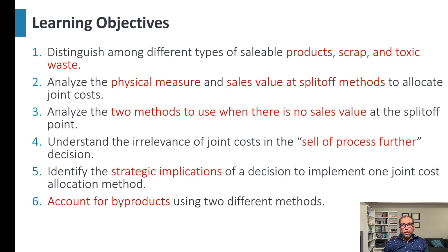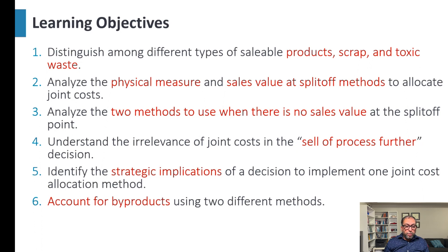We will analyze the physical measure method — how many kilograms, meters, or other units we can use to distribute the cost. We can also use the sales value at split-off method to allocate joint costs. There are two additional more technical, accounting-based methods as well. These give us four methods total, broadly divided into market-based and physical measure approaches.